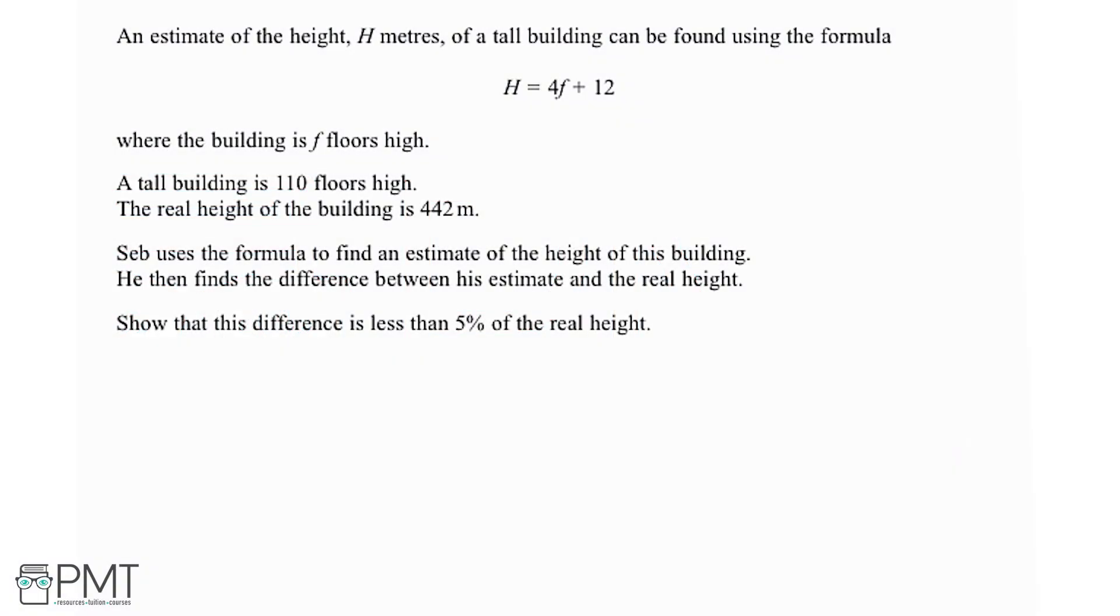An estimate of the height h metres of a tall building can be found using the formula h equals 4f plus 12, where the building is f floors high. A tall building is 110 floors high, and the real height of the building is 442 metres.